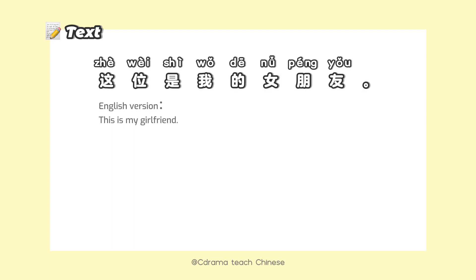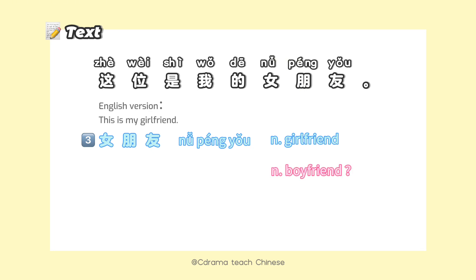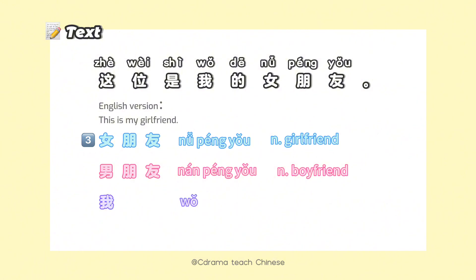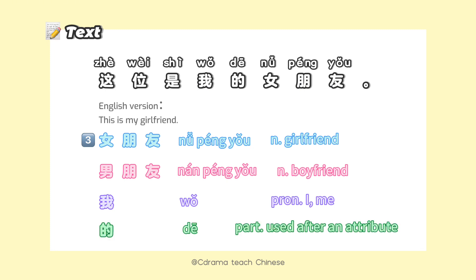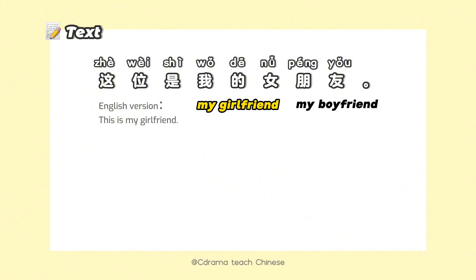这位是我的女朋友. 女朋友 means girlfriend. So how can we say boyfriend in Chinese? We could say 男朋友. 我 means I or me, and 的 is used as a possessive particle. So 我的女朋友 means my girlfriend, and 我的男朋友 means my boyfriend.